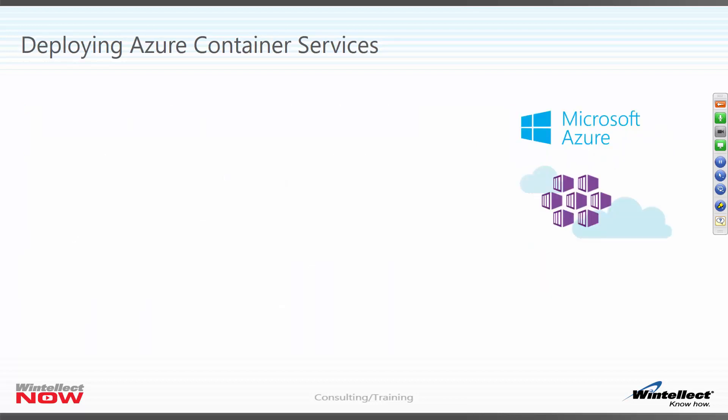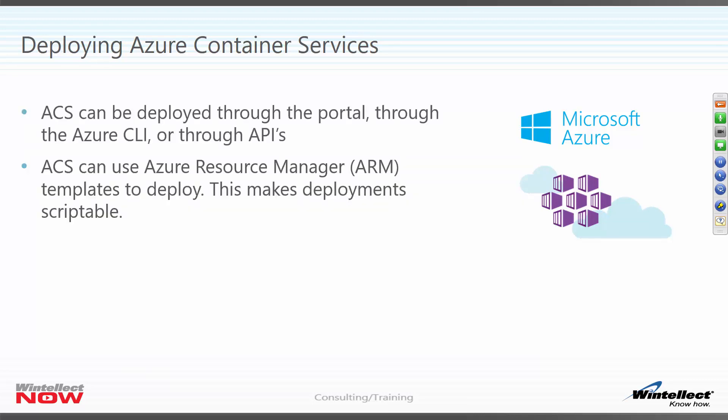Let's talk about deploying Azure Container Services. Now that we've seen the theory, we're going to look at deploying ACS and jump right into a demo. Azure Container Services can be deployed through the portal, through the Azure CLI, or through the API. The ways we're going to look at are using the portal and the Azure CLI — not the APIs, which are more for writing third-party modules or scripting via web services.